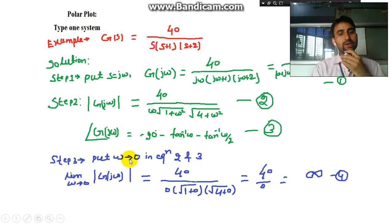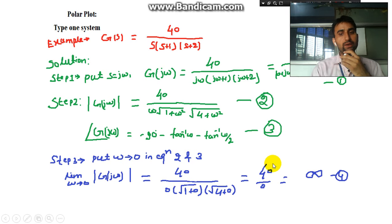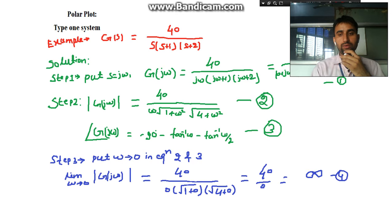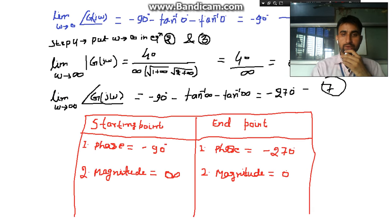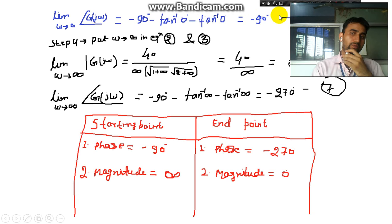Step 3: put ω → 0 in the magnitude equation. We get 40 divided by (0 · √1 · √4), which gives 40/0 = infinity. So at ω → 0 the magnitude is infinity. Putting ω → 0 in the phase equation gives −90° − tan⁻¹(0) − tan⁻¹(0) = −90°. Therefore the plot starts at infinity at −90°.